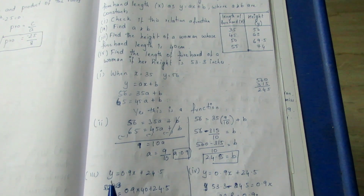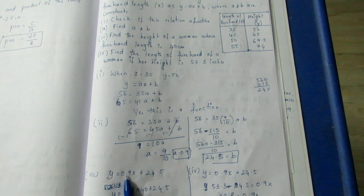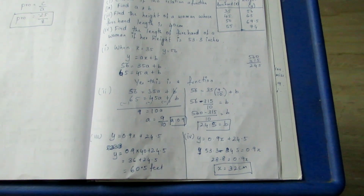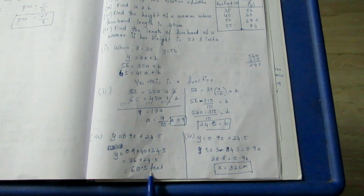The third sub-question: find the height of a woman whose forehand length is 40. Forehand length means x = 40. If you substitute for 40, the final answer is 60.5 feet.